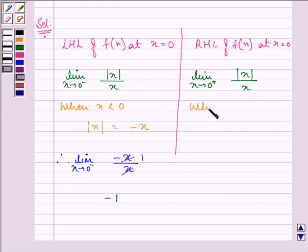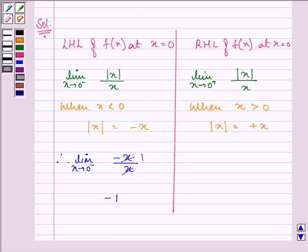When x is greater than 0, then |x| equals positive x.